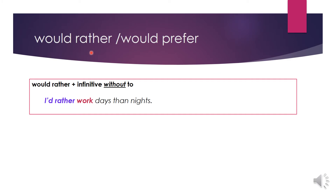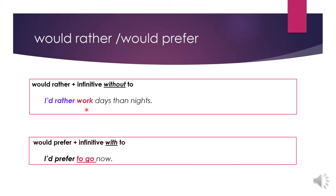Would rather, would prefer — we use these two structures to express preferences. 'Would rather' is followed by bare infinitive without 'to'. For example, 'I'd rather work days than nights.' However, 'would prefer' is followed by an infinitive with 'to': 'I'd prefer to go.'